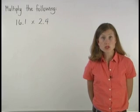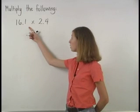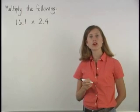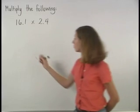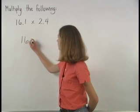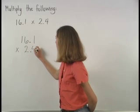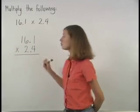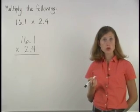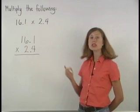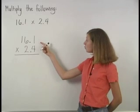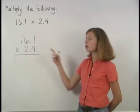To multiply decimals, 16.1 times 2.4, first line up the numbers, then multiply as though we were multiplying whole numbers. So we can think of this problem as 161 times 24.